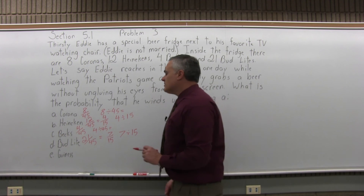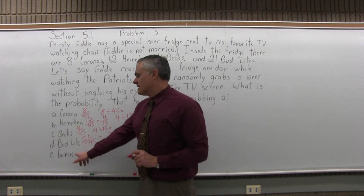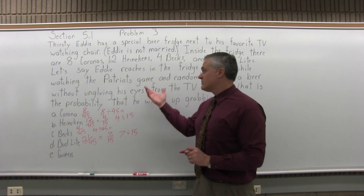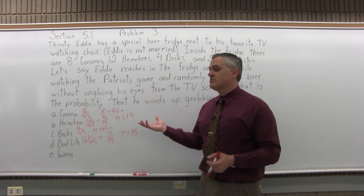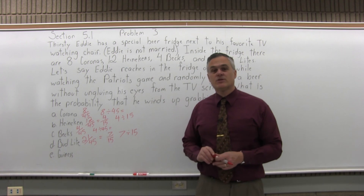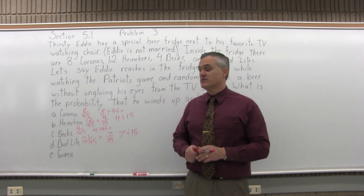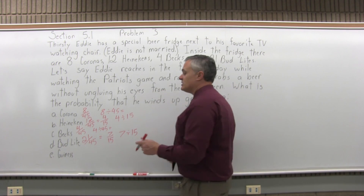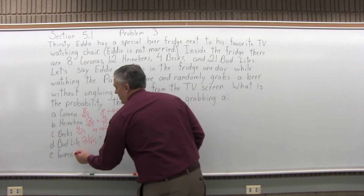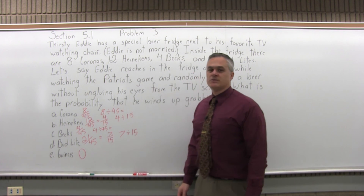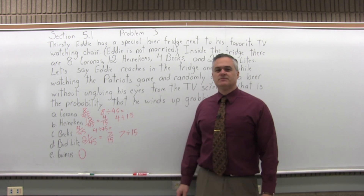Part E is a little more interesting — Guinness. There's no Guinness in the fridge, so it's impossible that he reaches in and comes out with a Guinness if there is none. So the probability for part E would be 0. It's impossible.